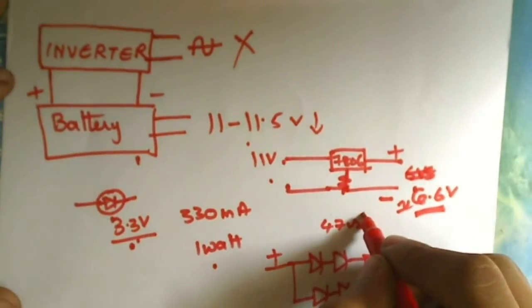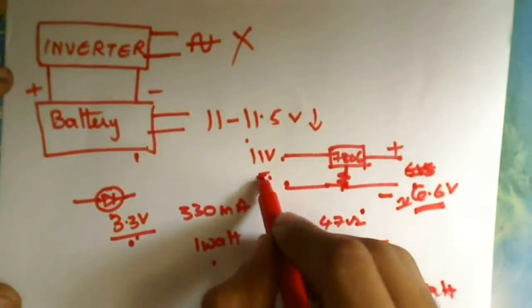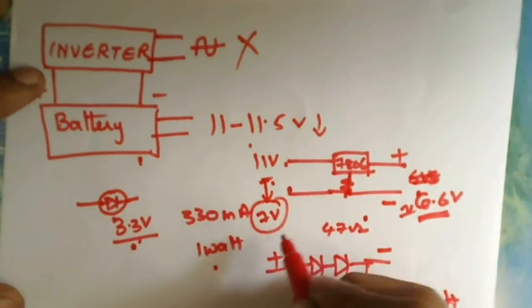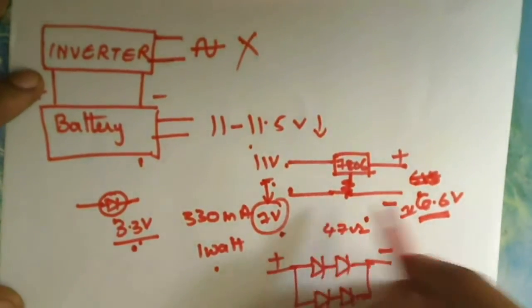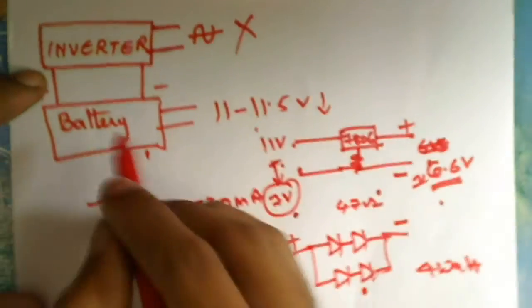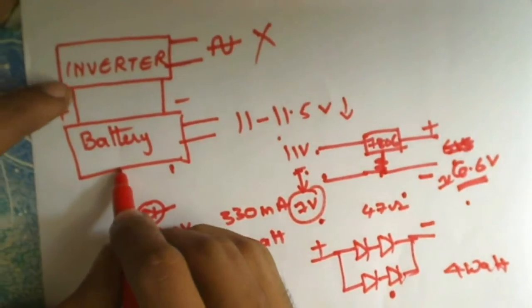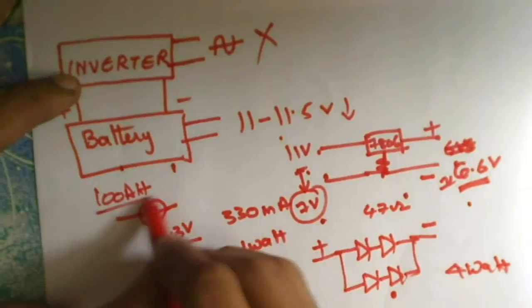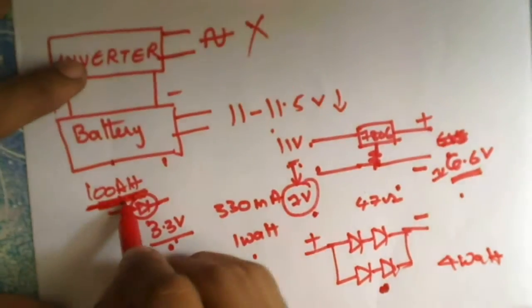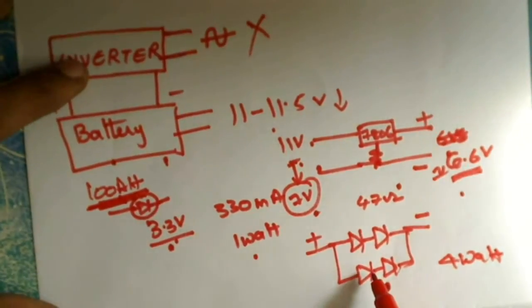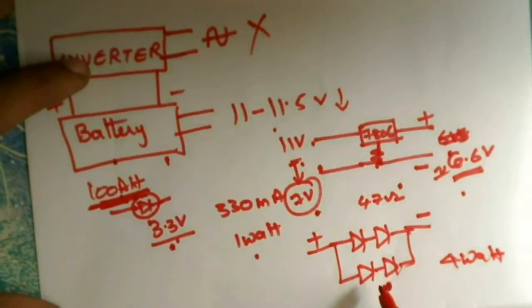So this circuit will work until the battery voltage drops to about 7V. Until then you can use the battery to light these LEDs. And mostly the battery used for the inverters is at least 100A battery. So for this rating the LEDs can light for 10 hours or even a lot more than that.